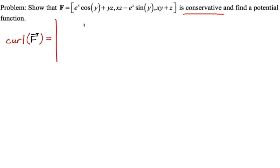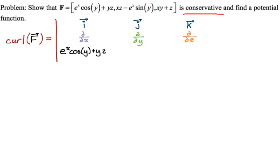The curl is a cross product, so the first row is i, j, and k. I'm spacing it out quite a bit because the components of this vector field are pretty large, so to make this look correctly spaced I have to do that. The second row is all the partial derivatives — partial x, partial y, and partial z. The third row is our vector field component by component: the x component, the y component, and the z component.